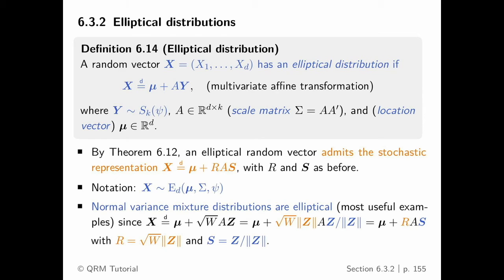If you know spherical distributions and study characteristic functions to derive their properties — things like the covariance of the uniform distribution on the unit sphere — you can use all of these as a building block for elliptical distributions. To go from the spherical to the elliptical world, from the circle to the ellipse, you apply exactly an affine linear transformation. That's a very simple step.